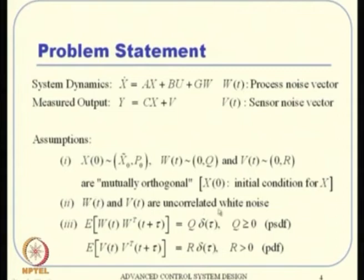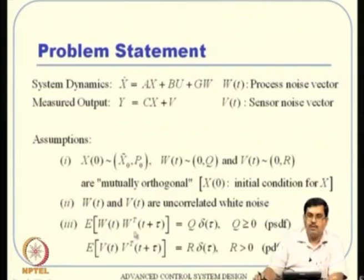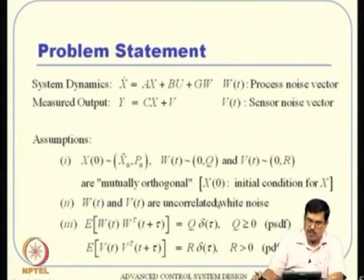We also assume that w and v are uncorrelated white noises — this is the fundamental backbone of Kalman filter theory. The noise processes are assumed to be white, meaning they are uncorrelated: E[w(t)·w(t+τ)^T] = 0 for τ ≠ 0. Both w and v are assumed to have zero mean.